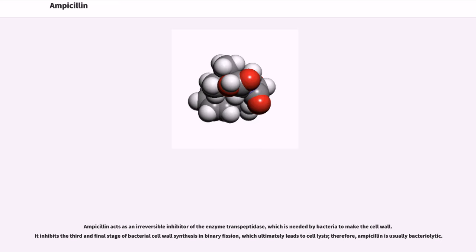Ampicillin acts as an irreversible inhibitor of the enzyme transpeptidase, which is needed by bacteria to make the cell wall. It inhibits the third and final stage of bacterial cell wall synthesis in binary fission, which ultimately leads to cell lysis; therefore, ampicillin is usually bactericidal.